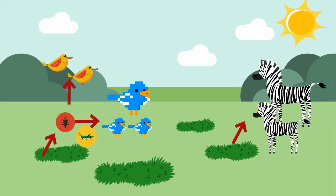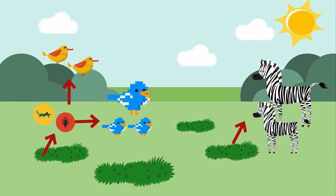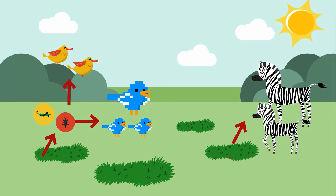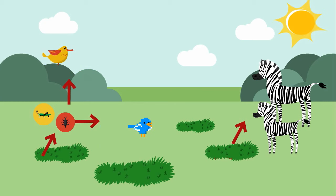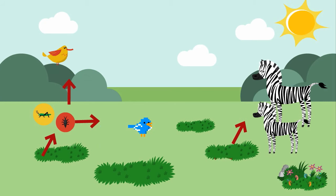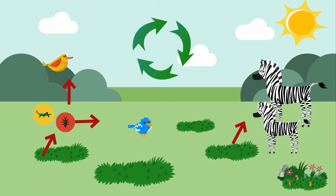The insect population drops because of so many new birds, so there is less food for the birds and their population also starts to drop. However, the zebras are happy because there is additional food for them and their population may increase. This process of rebalancing in a food web continues over and over again.